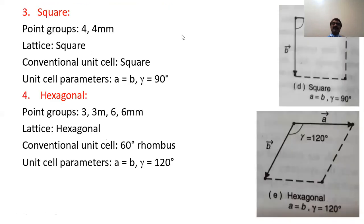In the square lattice, A is equal to B — both sides are equal — and the angle between the sides is equal to 90 degrees. The lattice parameters are equal and the angle between them is 90 degrees. The conventional unit cell is a square.